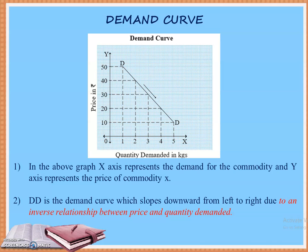When the price of the commodity was 50 rupees, the consumer demanded only 1 kg. As the price falls to 40, the consumer is demanding 2 kg. When the price again falls to 30, the demand increases to 3 kg. At 20 rupees per kg, the consumer is demanding 4 kg, and so on. So you can see there is an inverse relationship.